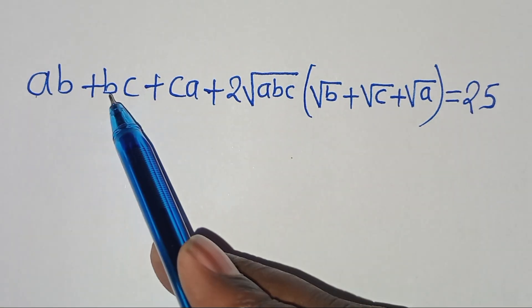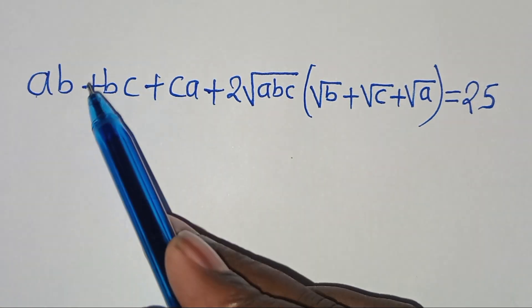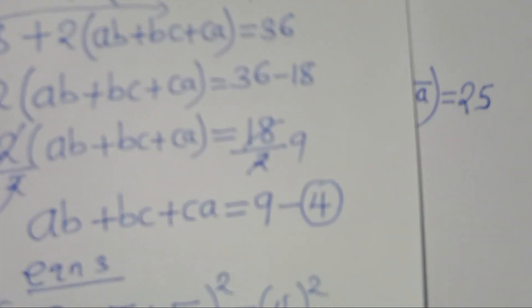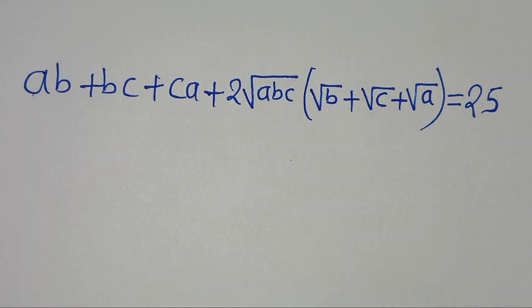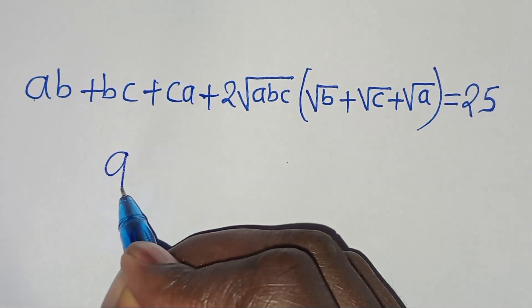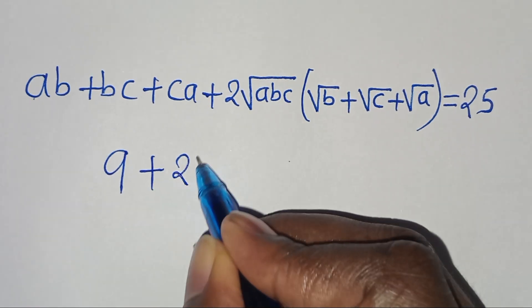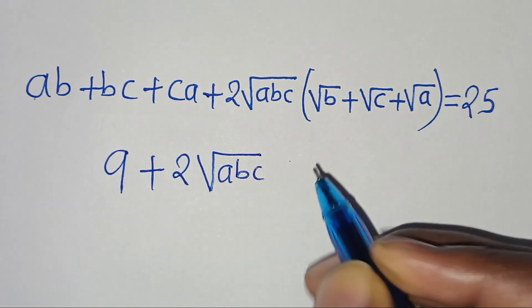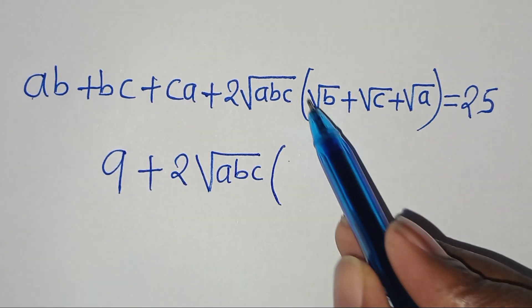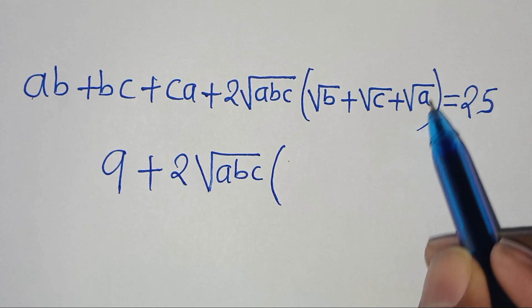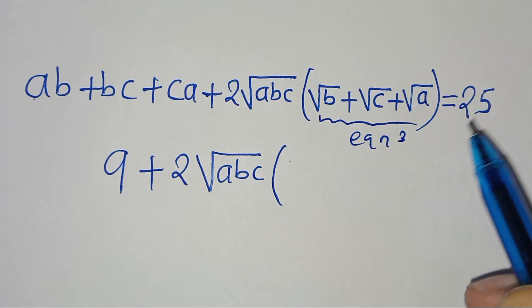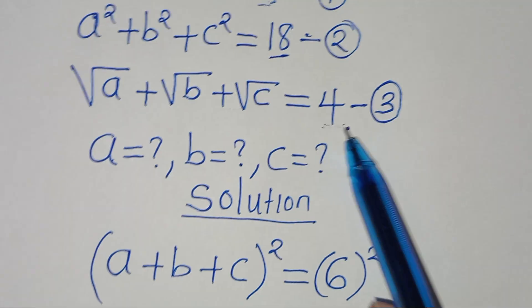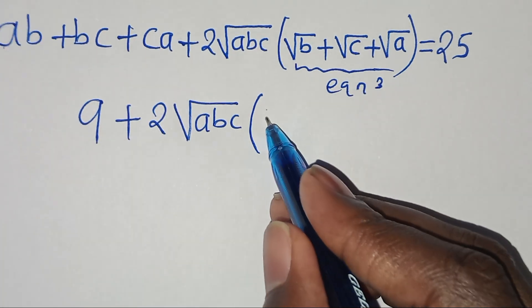Now ab + bc + ca is from equation 4, which equals 9. Substituting: 9 + 2√(abc)(√a + √b + √c) = 25. And √a + √b + √c from equation 3 equals 4, so we substitute 4.